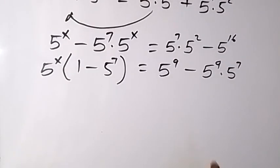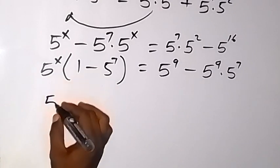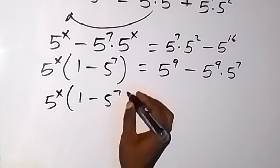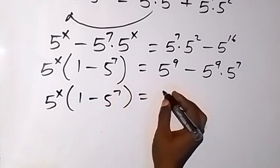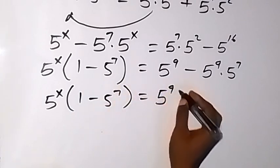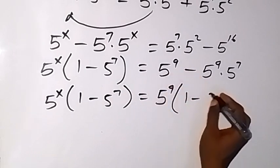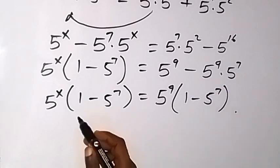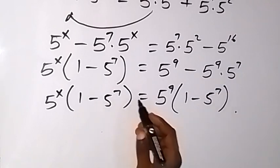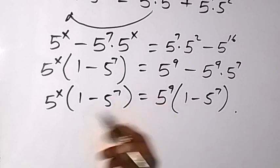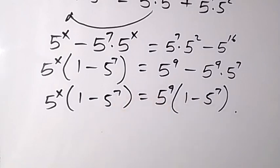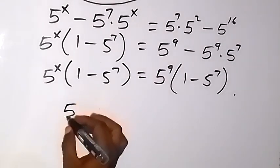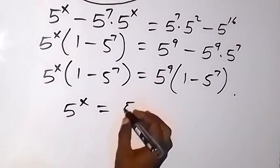So we can write 5 raised to power x times bracket 1 minus 5 raised to power 7 equals 5 raised to power 9 times bracket 1 minus 5 raised to power 7. Since 1 minus 5 raised to power 7 appears on both sides, they cancel each other, leaving 5 raised to power x equals 5 raised to power 9.